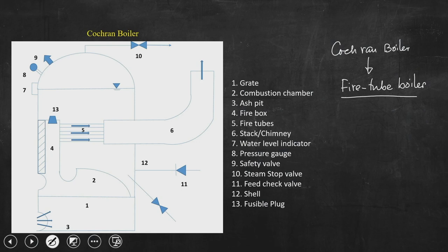The Cochran boiler has a hemispherical roof. The first component is the grate. In the last class when we discussed the Babcock Wilcox boiler, we saw the chain grate stoker where the chain itself acts like a grate. The grate is nothing but a perforated plate — a plate with holes through it.